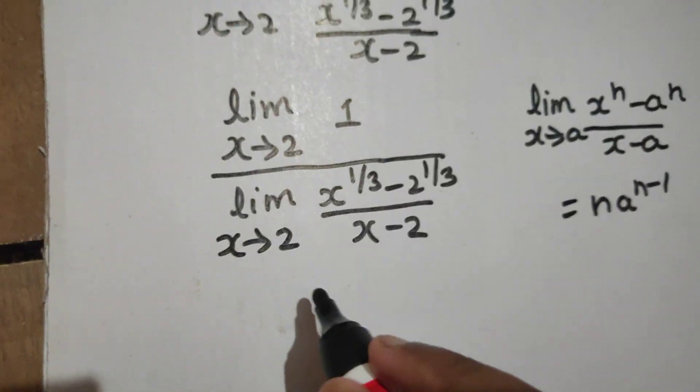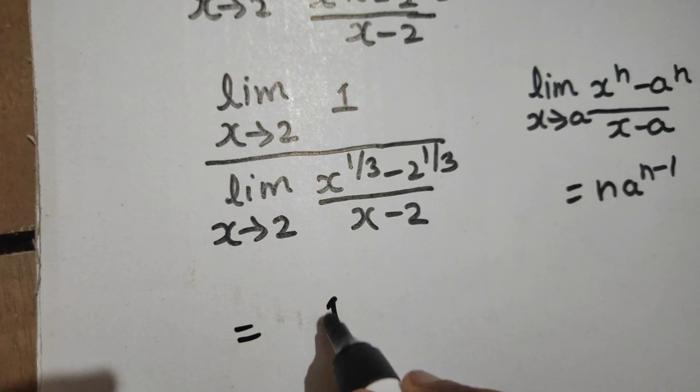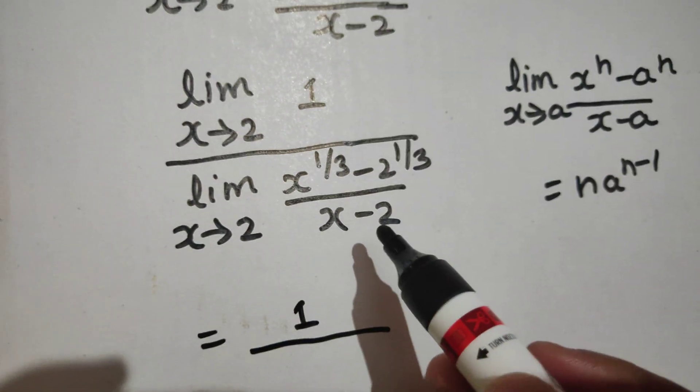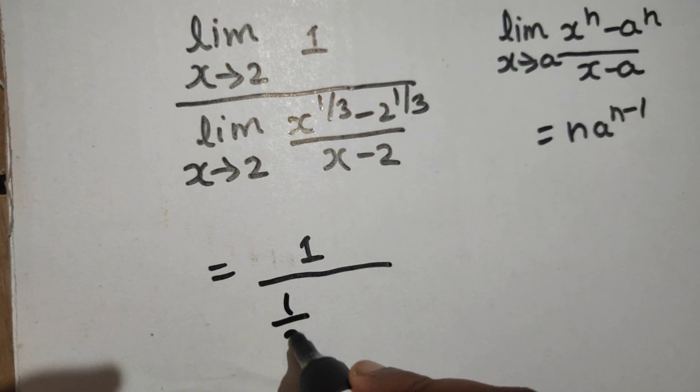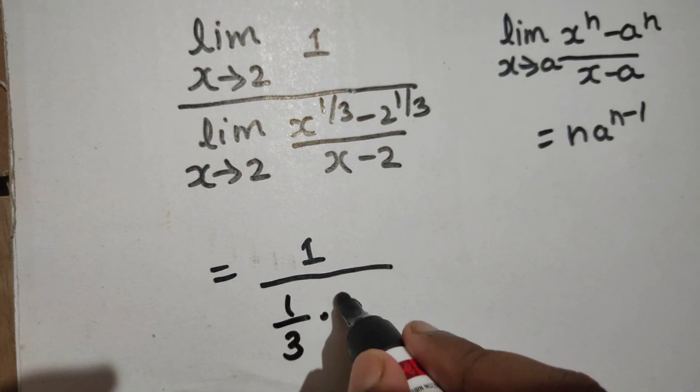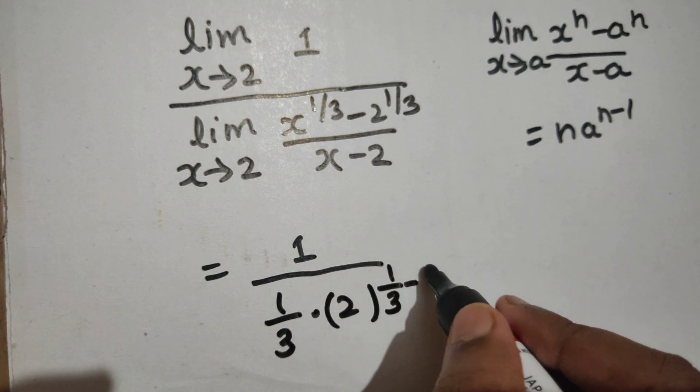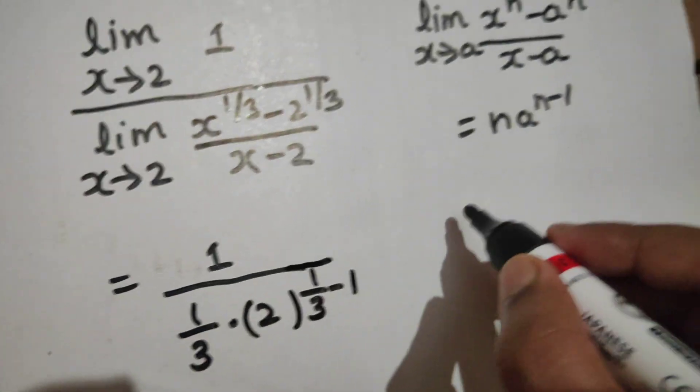When it comes to the denominator, here n is 1/3, and a here is 2, so we get 2 power n minus 1, which is 1/3 minus 1.